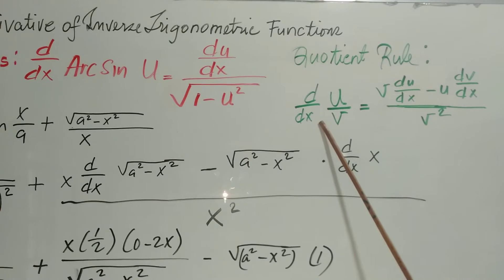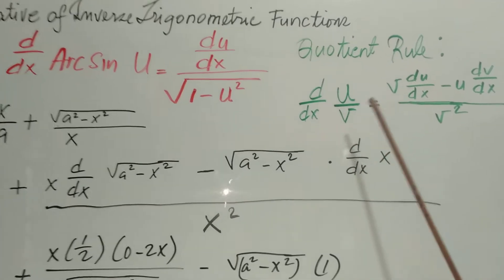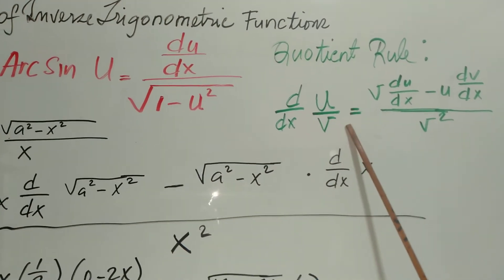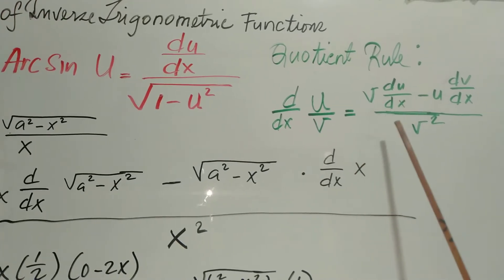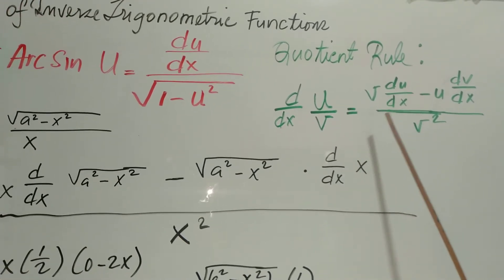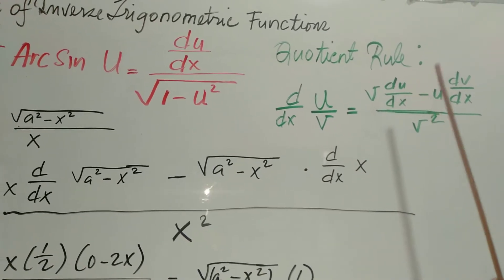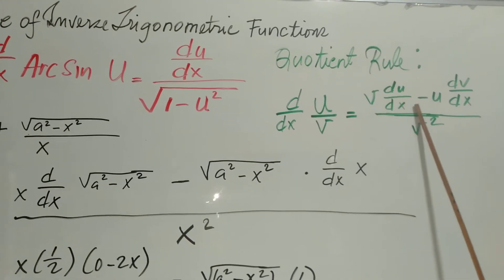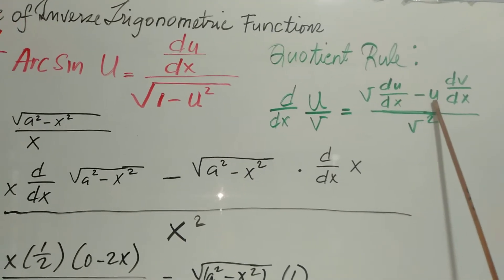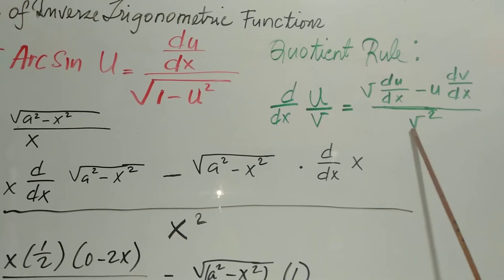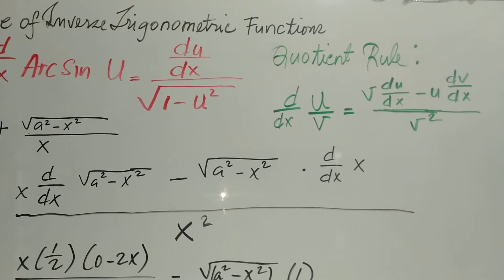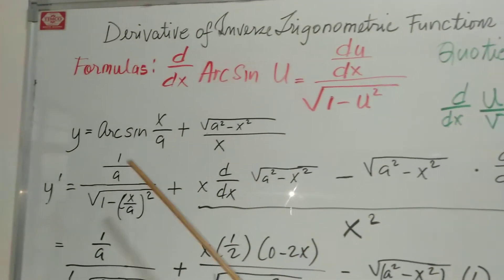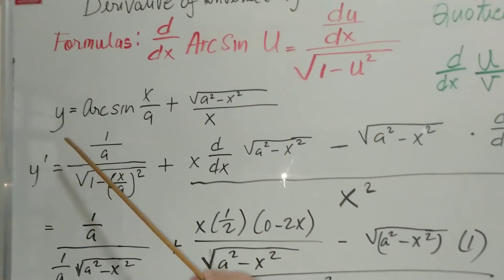The quotient rule: the derivative of the quotient of u over v, where u is the numerator and v is the denominator, is equal to v times du/dx minus u times dv/dx, all over v squared — the square of the denominator. And we're going to apply those formulas here for our problem.